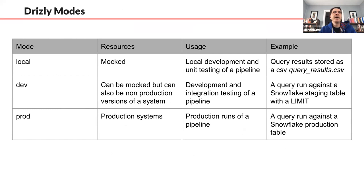We divided modes into local, dev, and prod. Local mode has every resource mocked — it's for quick local development and unit testing of pipelines. So instead of actually pinging Snowflake, it might just be files saved that mimic the results of a Snowflake query. Dev mode can use mocked or non-production versions of a system — for example, pinging a staging table with a limit on the query — and is more for integration testing and confirming schema. Prod is for production systems.